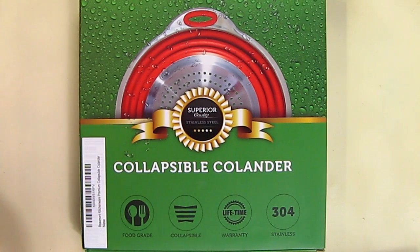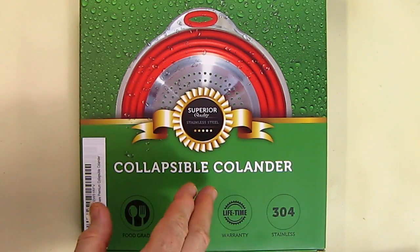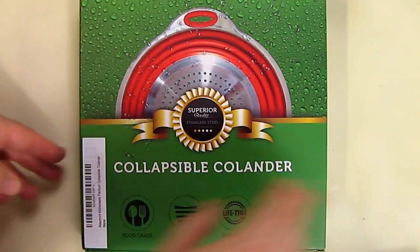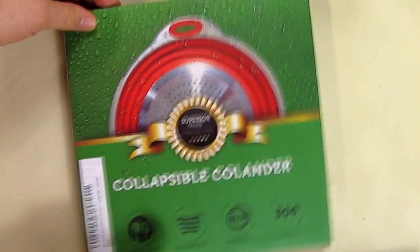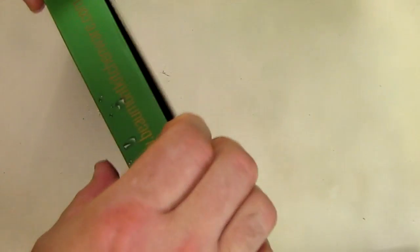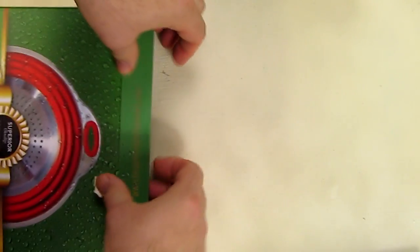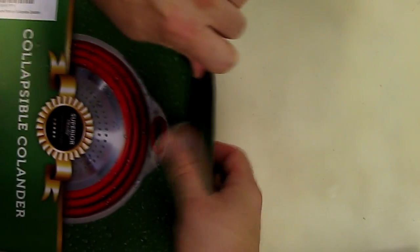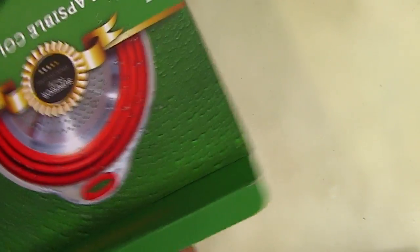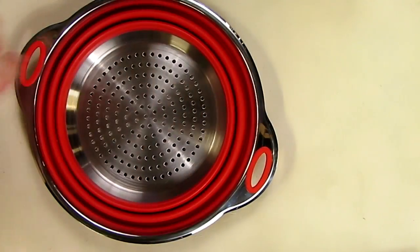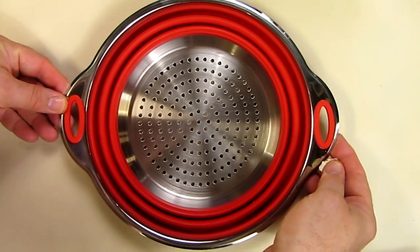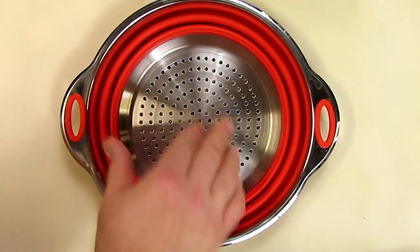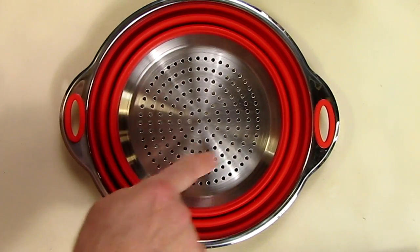This is my video review of the collapsible colander from Beaumont kitchenware. It came in this nice green box. Let's see what's inside. There you have it, very nice. As you can see, it's got a very smooth, shiny stainless steel.